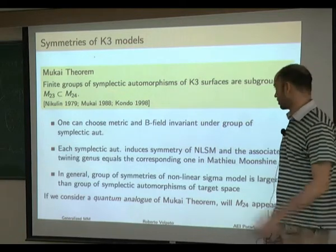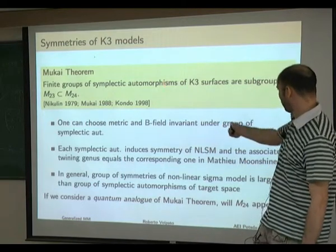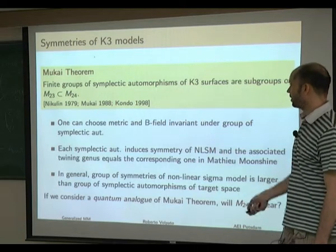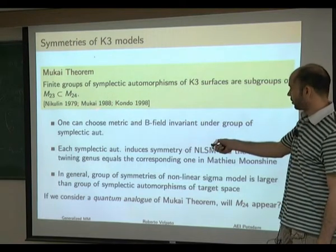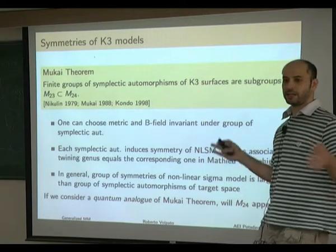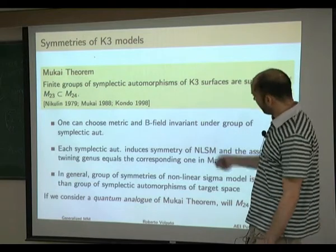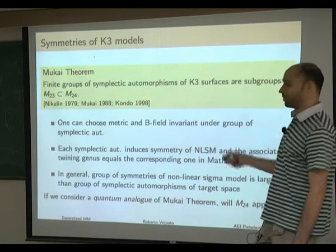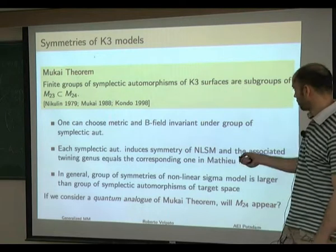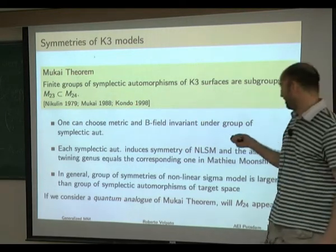Symplectic automorphisms are the ones that preserve the holomorphic 2-0 form on the K3 surface. This was proved by Mukai in 1988, with previous work by Nikulin who classified the abelian finite groups of symplectic automorphisms. An alternative and much simpler proof was given by Kondo in 1998.